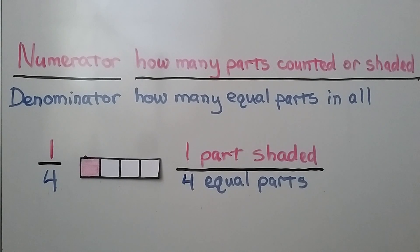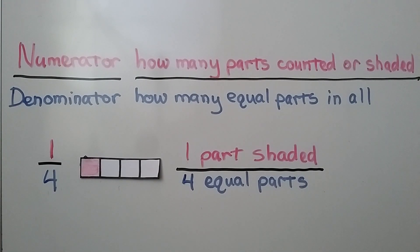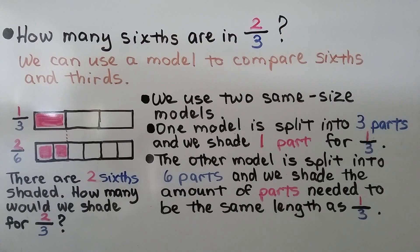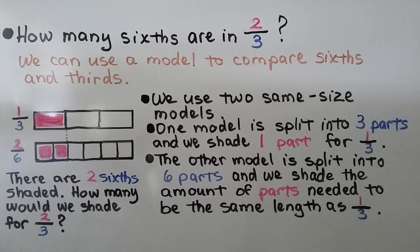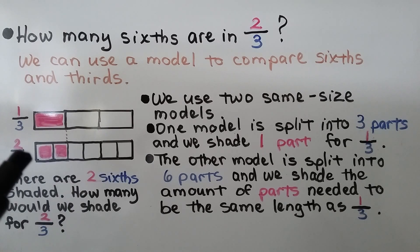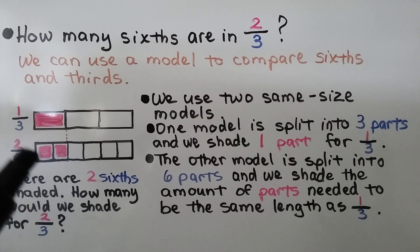The numerator is how many parts are counted or shaded, and the denominator is how many equal parts in all. We have one-fourth — four equal parts and one part is shaded, so one-fourth is shaded. How many sixths are in two-thirds? We can use a model to compare sixths and thirds. We use two same-size models. This rectangle is the same size as this rectangle. One model is split into three parts and we shade one part for one-third. The other model is split into six parts and we shade the amount of parts needed to be the same length as one-third. There are two-sixths shaded.